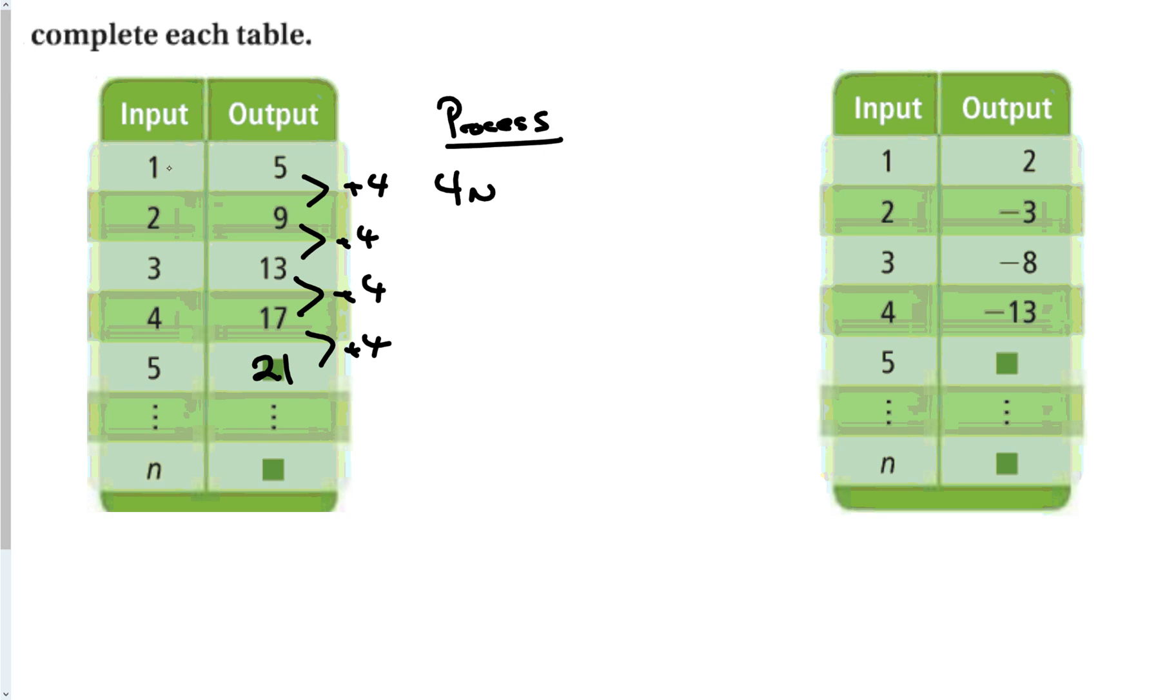So I know I'm adding four. So my process. Okay. My process column is four times something. Okay. Well, four times one is four. That doesn't give me five. Four times two is eight. That doesn't give me nine. But if I add one, we now have a formula four n plus one. All right. Pick any one of these five numbers and test it. Let's test it with a three. Four times three is 12 plus one is 13. All right. So this equation does work.